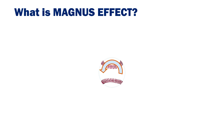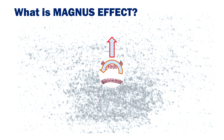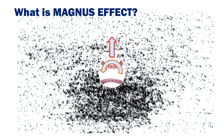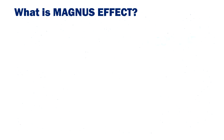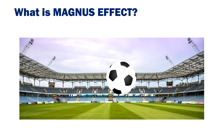According to this principle, a rotating circular object will create a force towards one direction. This is because air is displaced towards one side and less air is present on the other, which creates an imbalance, thus causing a force in a particular direction.